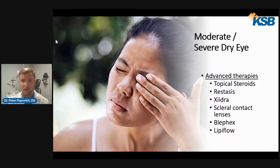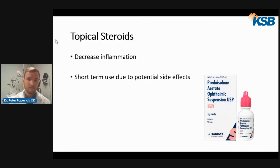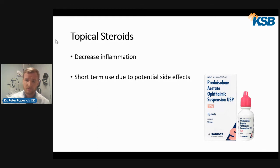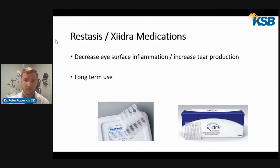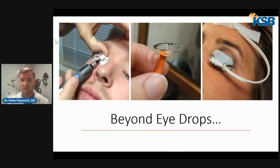When these products fail, there are more advanced therapies your eye care provider can offer, including topical steroids and dry eye medications like Restasis and Xiidra. Topical steroids decrease inflammation on the surface of the eyes and are very effective, but can only be used short term due to potential side effects such as glaucoma, increased eye pressure, and cataract formation. For people who need more long-term medication, we switch them to Restasis and Xiidra, which also decrease inflammation and help increase tear production.